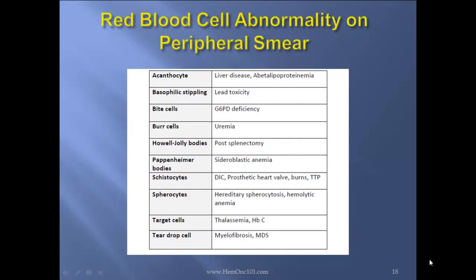Red blood cell abnormalities on the peripheral smear. Acanthocytes — think liver disease and abetalipoproteinemia. Basophilic stippling — lead toxicity. Bite cells — G6PD deficiency. Burr cells — uremia. Howell-Jolly bodies — post-splenectomy. Pappenheimer bodies — sideroblastic anemia. Schistocytes — DIC, prosthetic heart valve, burns, TTP.